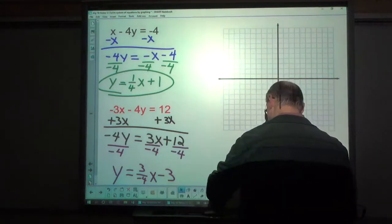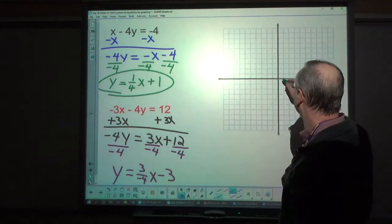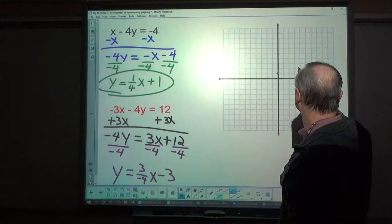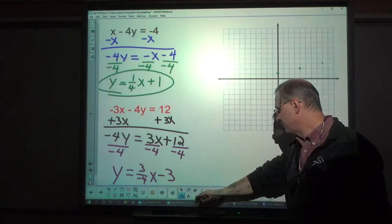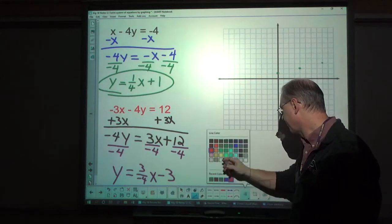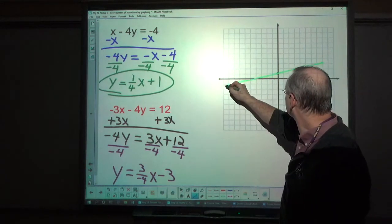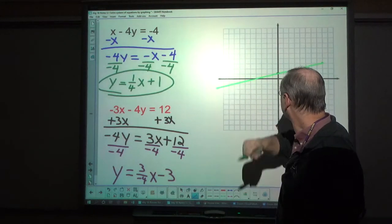So now I'm going to graph these two. I'll graph green for the green one. Up 1, and every time I go up 1 to the right 1, 2, 3, 4. Up 1, 1, 2, 3, 4. That's enough for me to draw my line. My line is going to start here and just continue on. That's correct.